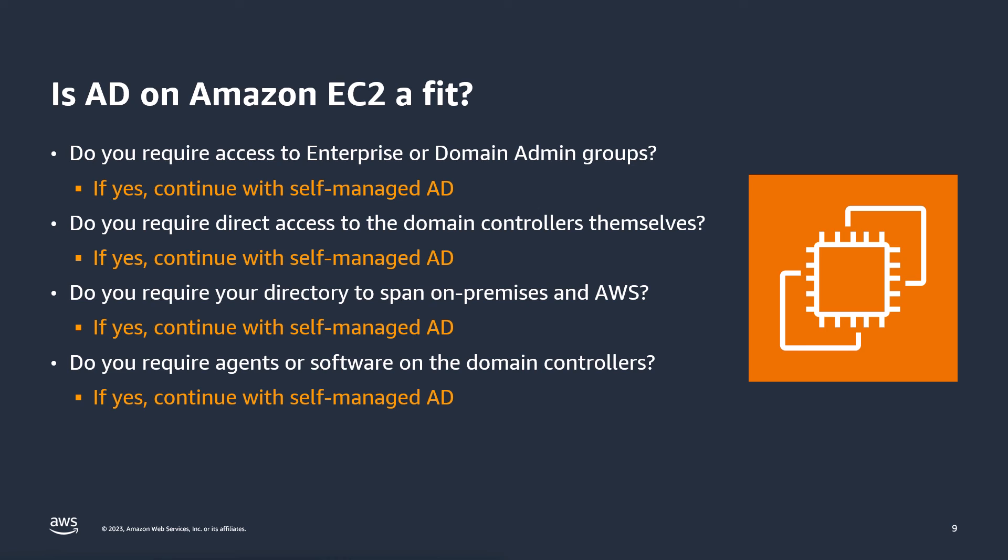For Active Directory on EC2 — self-managed AD — consider the following: Do you require access to enterprise or domain admin groups? If yes, continue using self-managed AD. Do you require direct access to domain controllers themselves? If yes, continue with self-managed AD. Do you require your directory to expand on-premises, including other cloud providers, data centers around the world, and AWS? If yes, continue using self-managed AD. Do you require agents or software installed on the domain controllers, such as security or logging software? If yes, continue using self-managed AD.